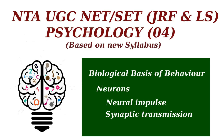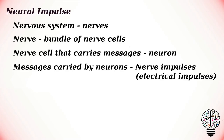Hey everyone, welcome to this psychology series. In this video we are going to talk about neural impulse and synaptic transmission. The nervous system is made up of nerves. A nerve is a bundle of nerve cells. A nerve cell that carries messages is called a neuron.